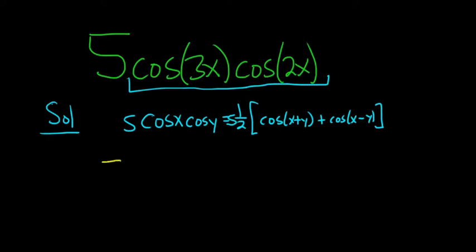I'll start by writing down the question: 5 cosine 3x cosine 2x. That's 5 times one half, so it's just five halves bracket. You can think of this as our x and this is our y, so it's x plus y.